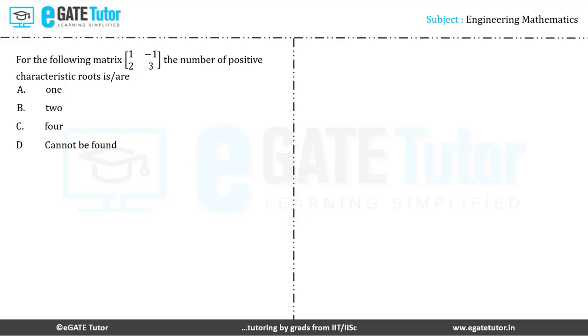For the following matrix [1, -1; 2, 3], the number of positive characteristic roots is R. We are given four options. Let us see the solution.